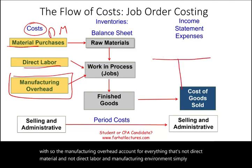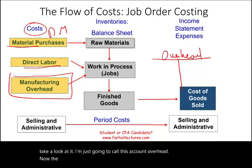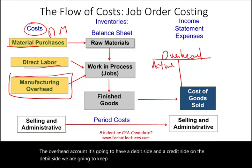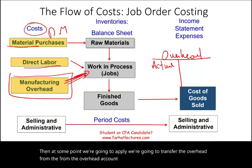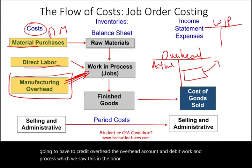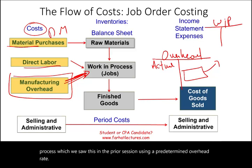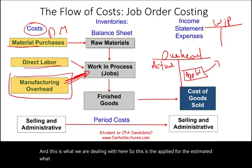The overhead account has a debit side and a credit side. On the debit side we keep track of actual overhead — what actually incurred. Then at some point we apply overhead: we credit the overhead account and debit work in process, using a predetermined overhead rate. The credit side represents the applied, or estimated, amount based on that predetermined overhead rate.